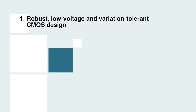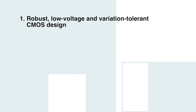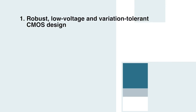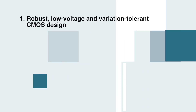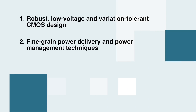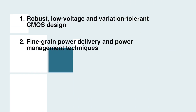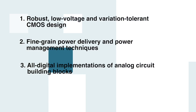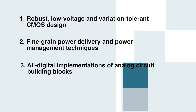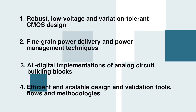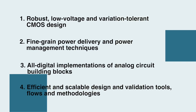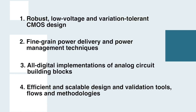There are four different areas. Number one is robust, low voltage, and variation tolerant CMOS design in scaled CMOS process. Second is fine-grained power management and delivery techniques. Third, all usual implementations of analog circuit building blocks. Number four, efficient and scalable design and validation tools, flows, and methodologies.